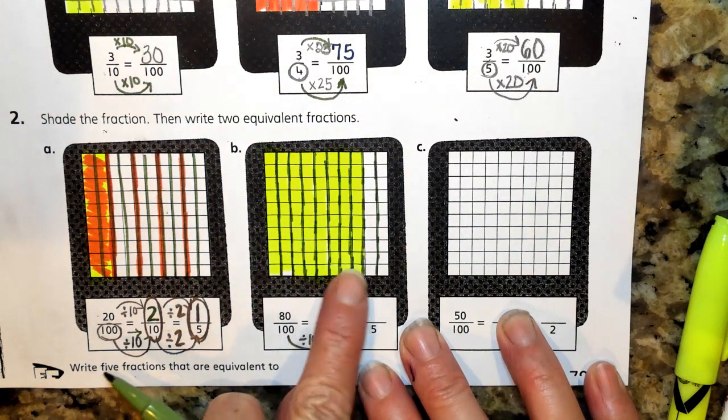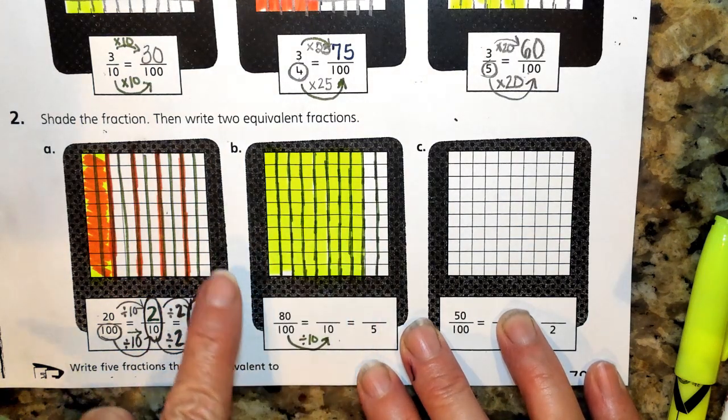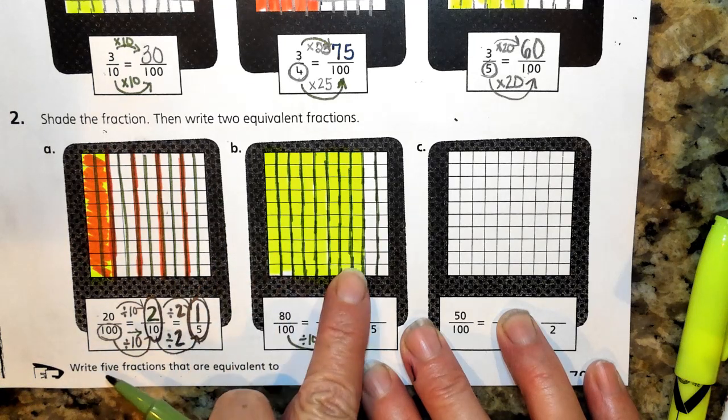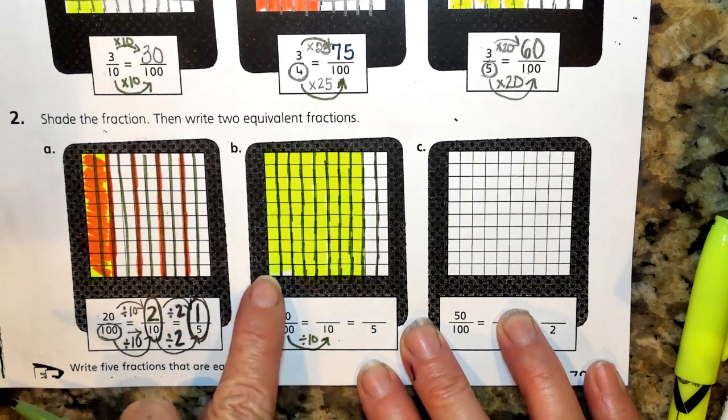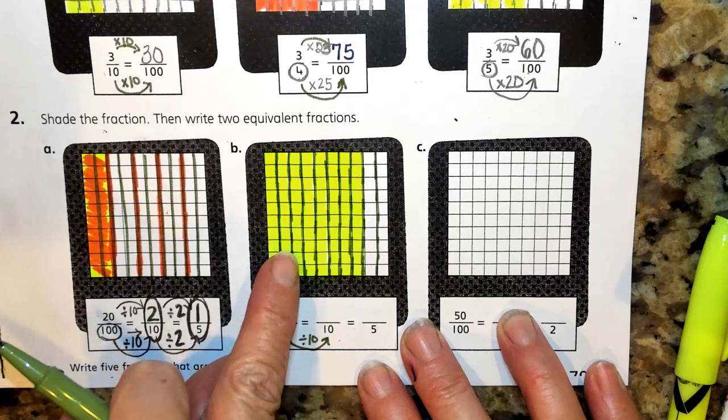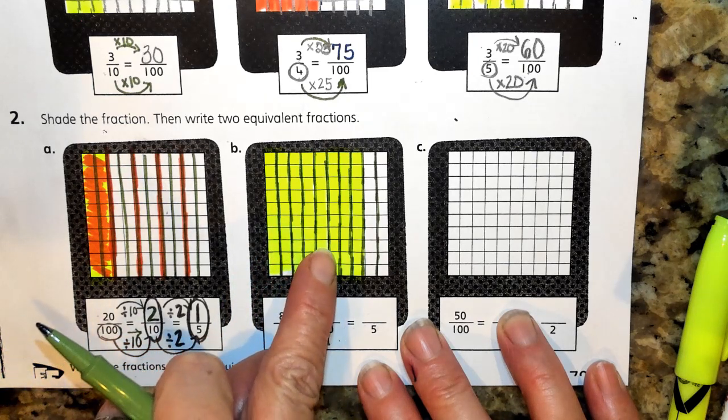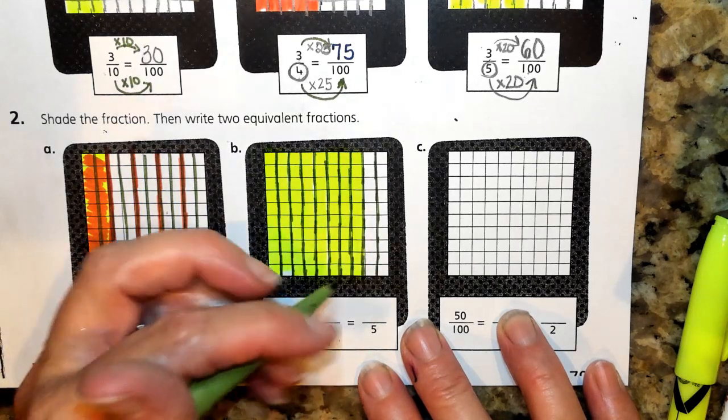And if I think of this as being tenths, I'm not thinking about it being 80 equal pieces, but I'm thinking about it being 1, 2, 3, 4, 5, 6, 7, 8 equal pieces.